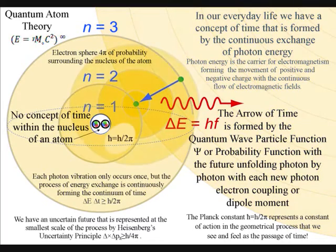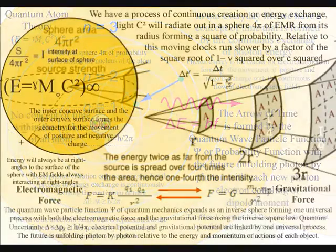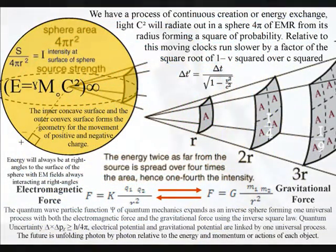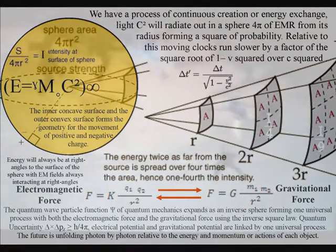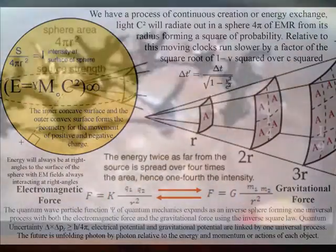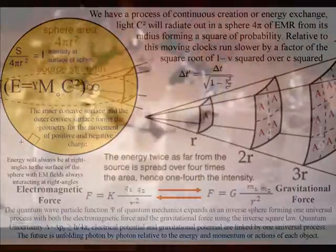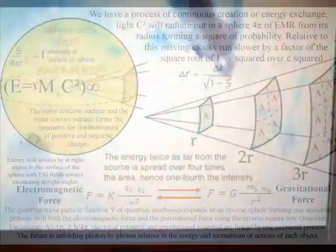The quantum wave particle function of quantum mechanics expands out as an inverse sphere, forming one universal process with both the electromagnetic force and the gravitational force using the inverse square law. Quantum uncertainty, electrical potential, and gravitational potential are all part of one universal process.